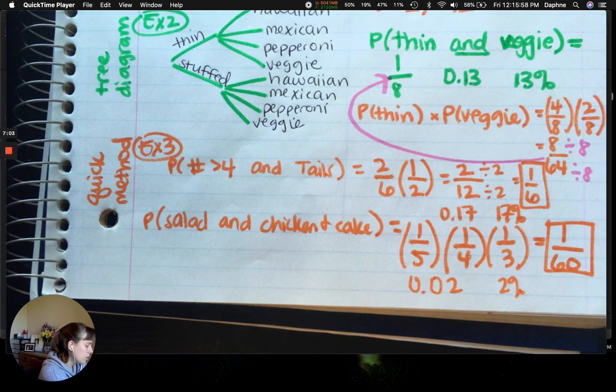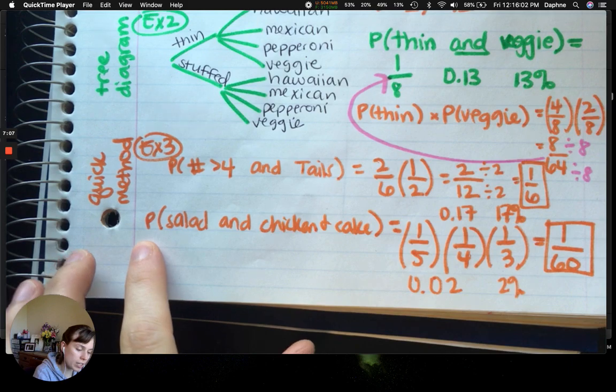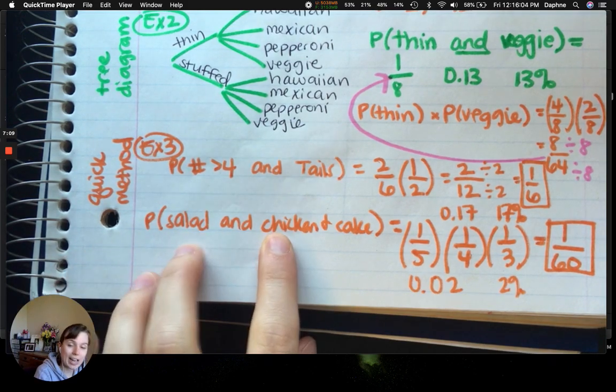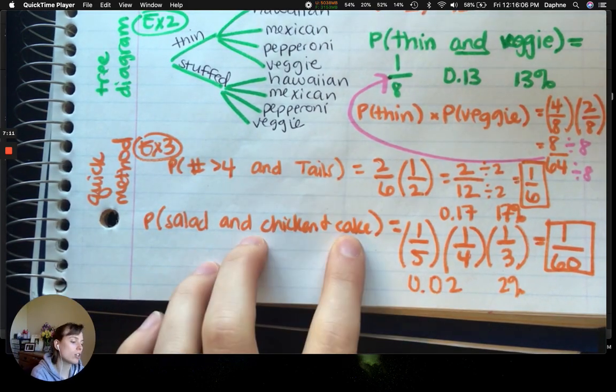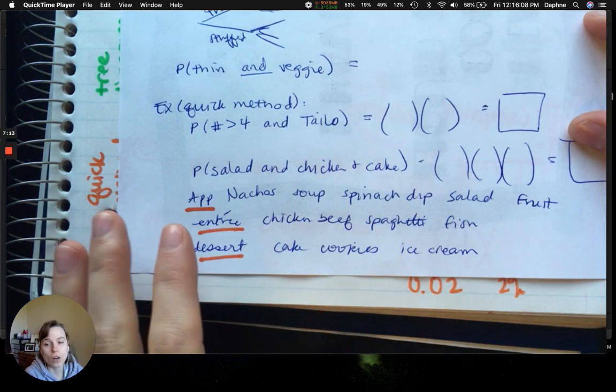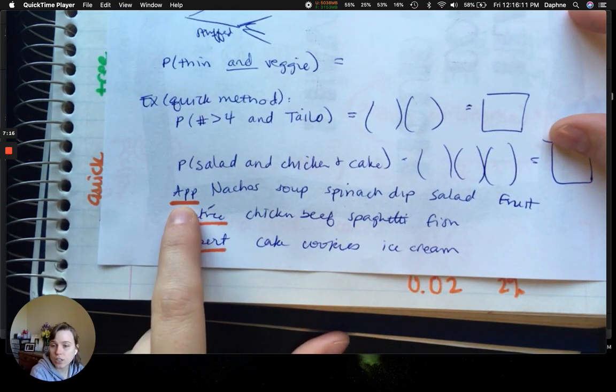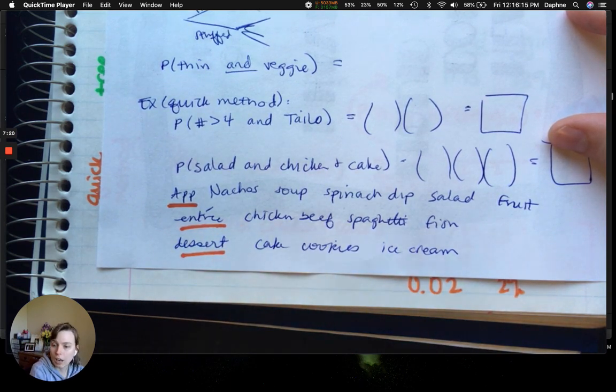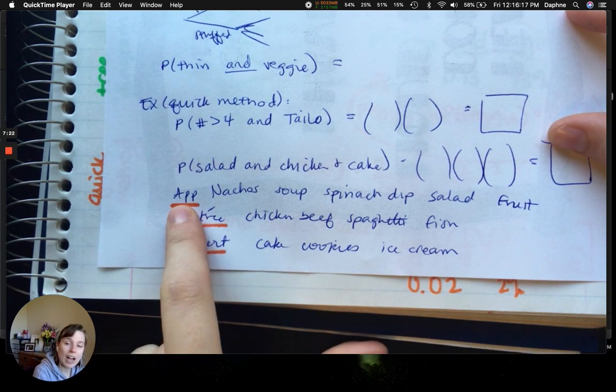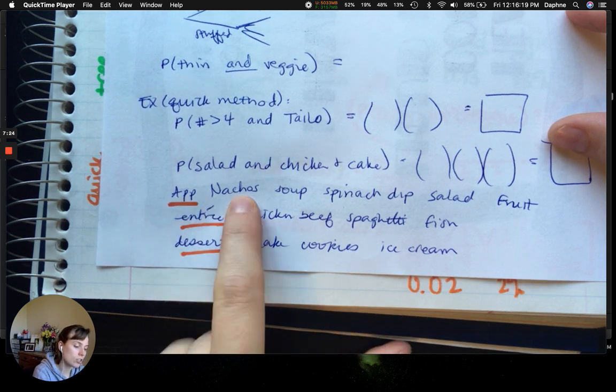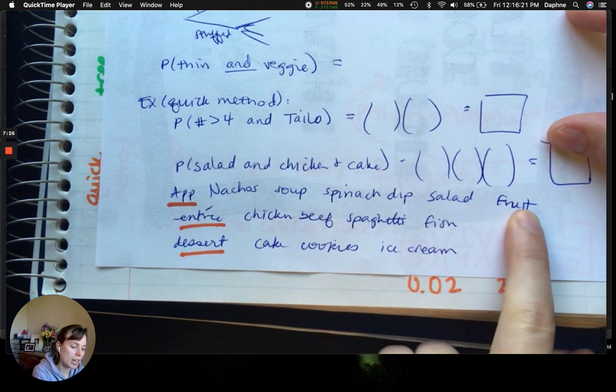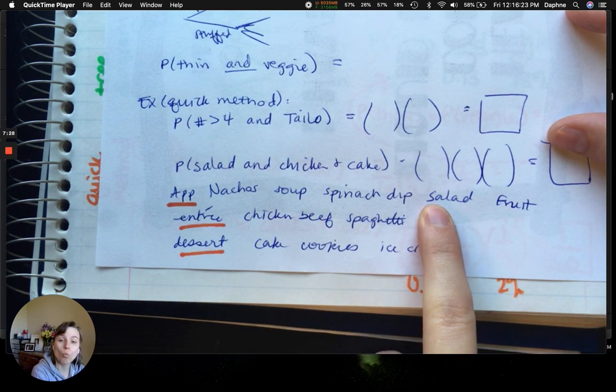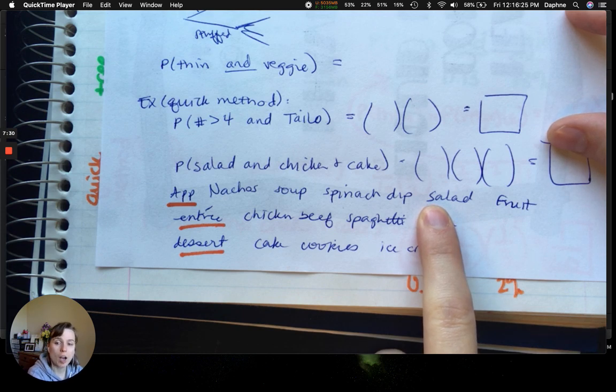And now, this last one, it'll make more sense when you actually see the menu. So, we're doing the probability that you order salad, chicken, and cake. All three of those. So, on this menu, you don't have to write this down, okay? There are appetizers that come before your meal, entree, which is your meal, and then dessert, which you eat after your main, of course. So, for appetizers, this restaurant has nachos, soup, spinach dip, salad, and fruit.